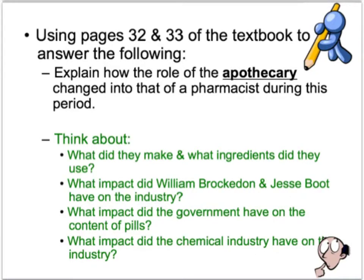Now please refer to the textbook, using pages 32 and 33. Answer the following: explain how the role of the apothecary changed into that of a pharmacist during this period. As you're doing this, think about: what did they make and what ingredients did they use? What was the impact of William Brockton and Jesse Boot on the industry? What impact did the government have on the content of pills, and what impact did the chemical industry have on the pharmaceutical industry?